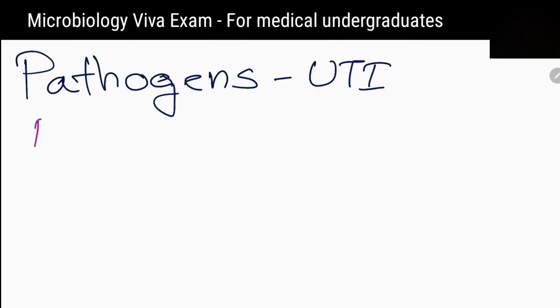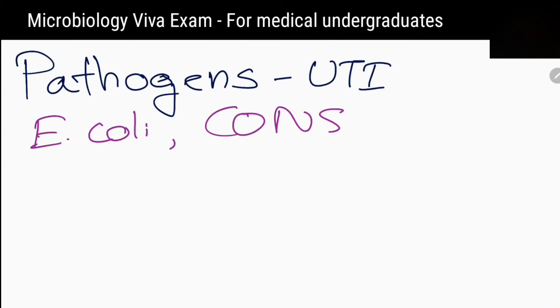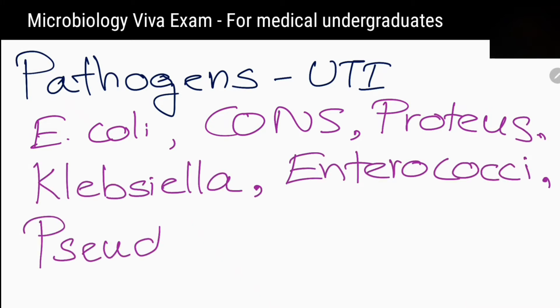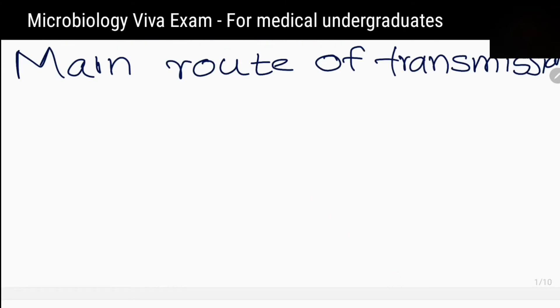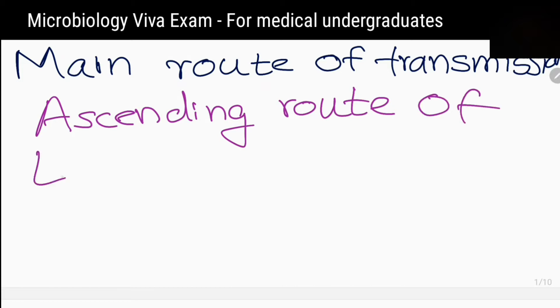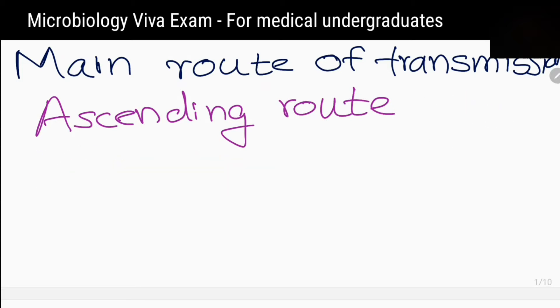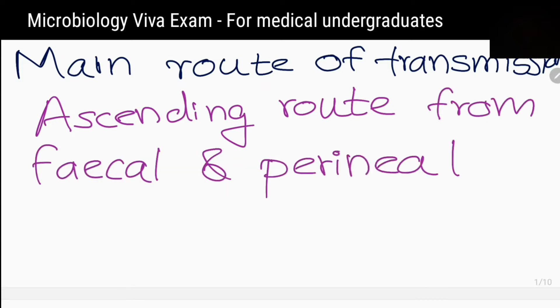What are the organisms causing UTI? Escherichia coli, Proteus, Klebsiella, Enterococci, and Pseudomonas species. What is the main route of transmission of those organisms? Ascending route from fecal and perineal flora.